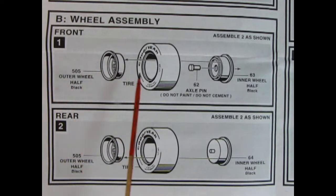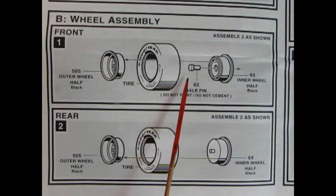Now panel B shows our wheel assembly. Here we have the outer wheel going into these nice Goodyear racing slicks. And then on our inner wheel we also have a little axle pin. Make sure you do not glue that because you want your wheels to rotate. And then in the rear we're doing pretty much the same thing. The outer wheel, our wonderful tires, and then the special inner wheel which goes in there.